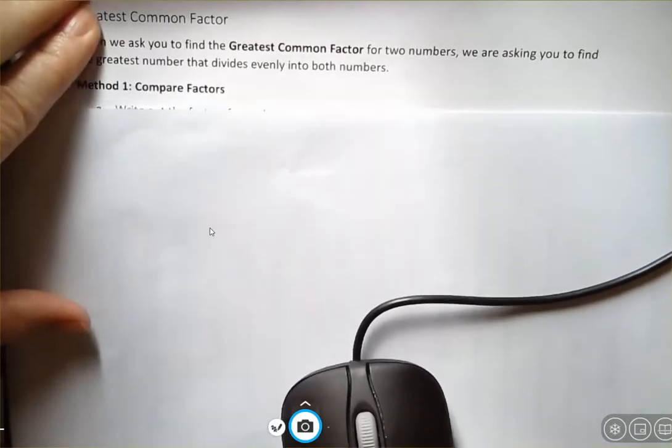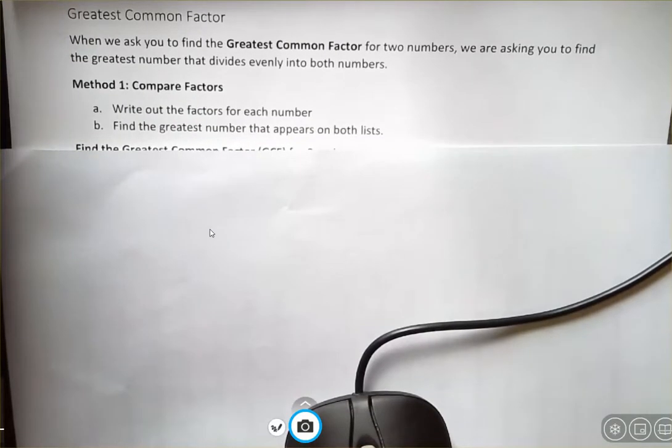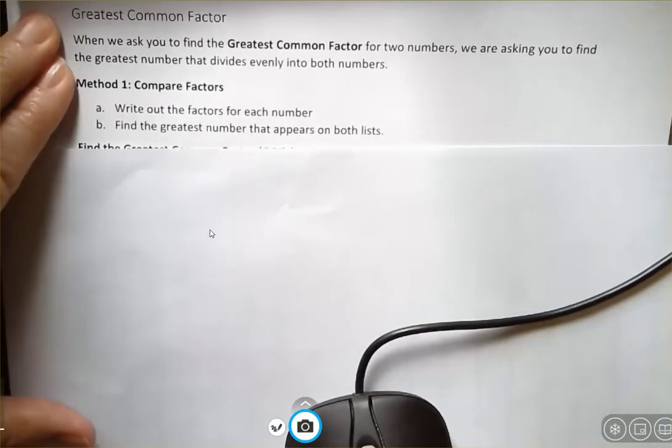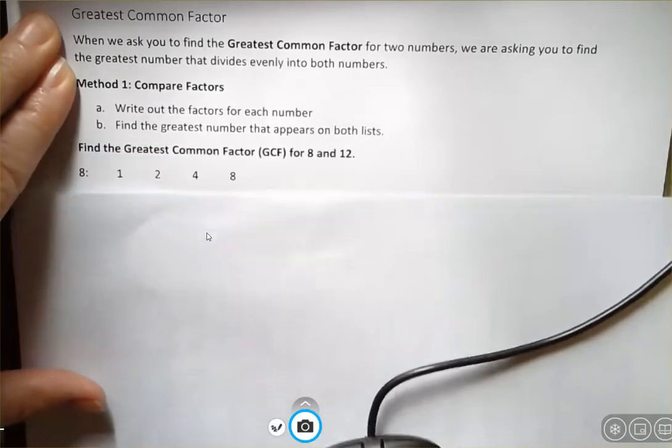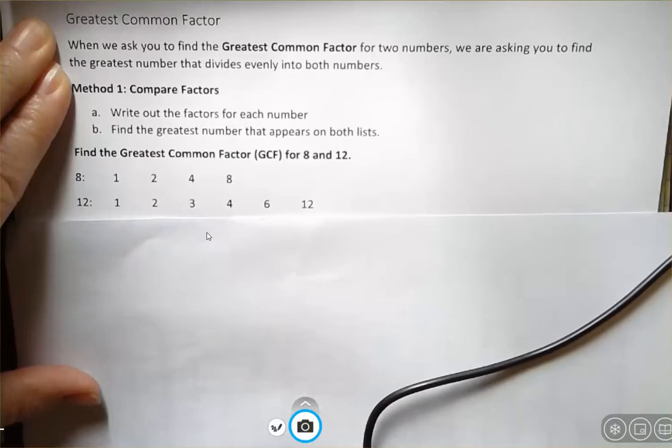I'm going to talk about a couple of different methods here, and the first method is just to compare the factors. Write out the factors for each number and find the greatest number that appears on both lists. So if I ask you to find the greatest common factor, the GCF is how we abbreviate that, for eight and 12.